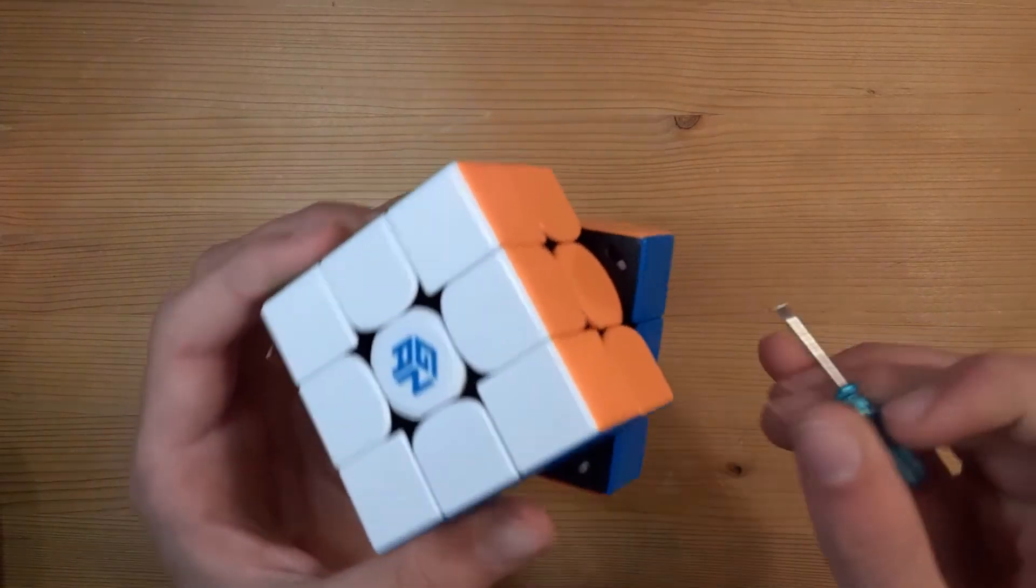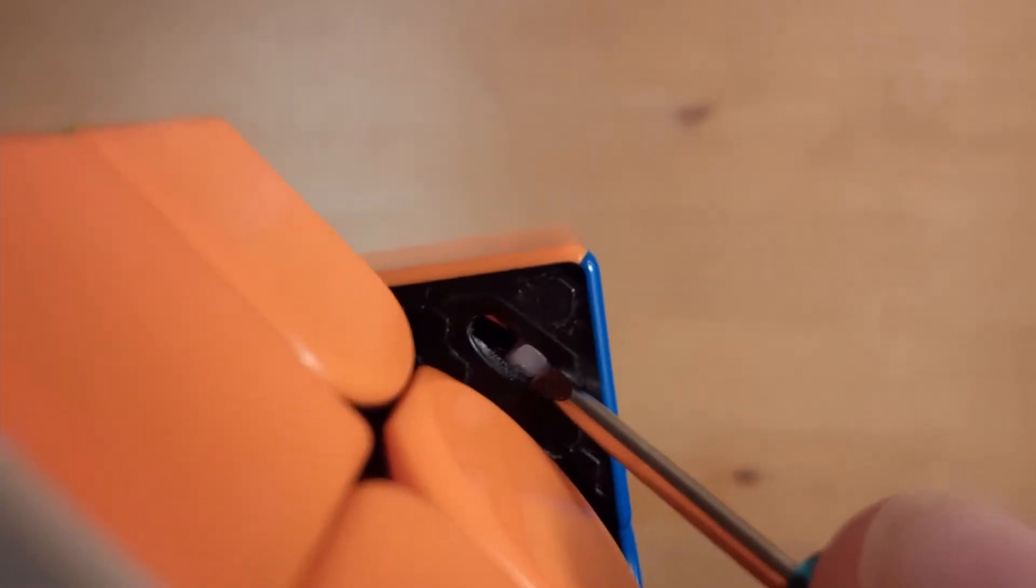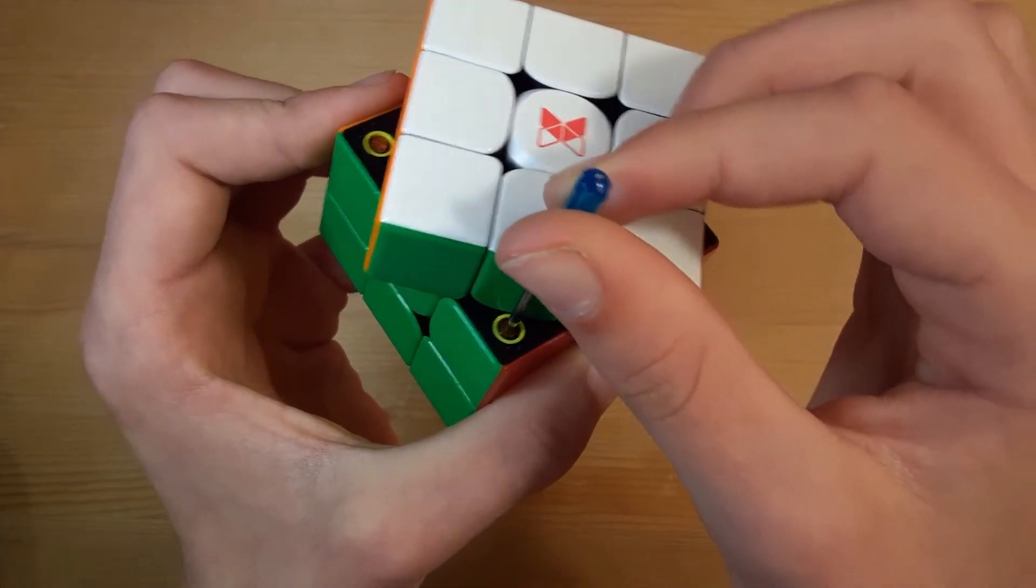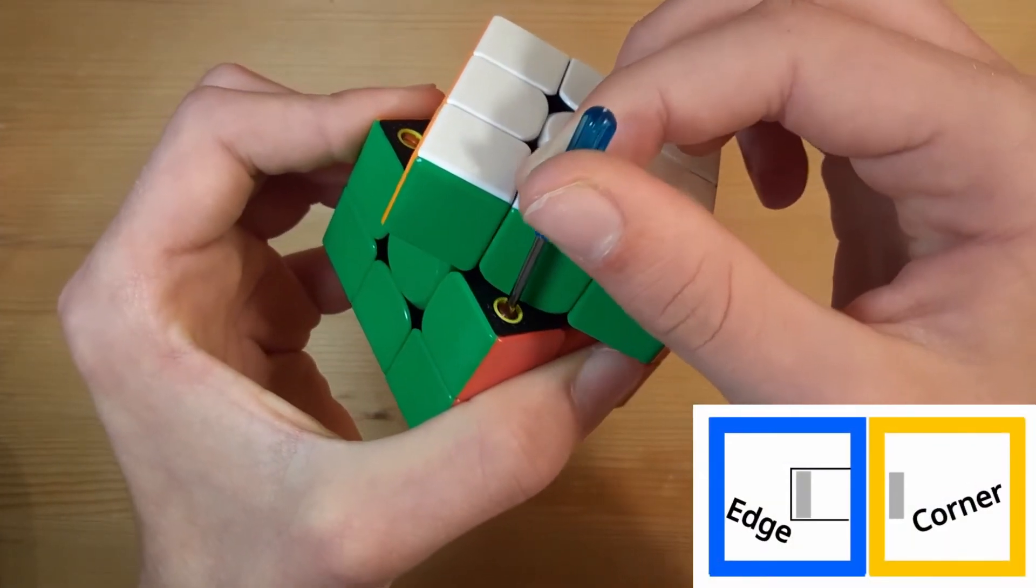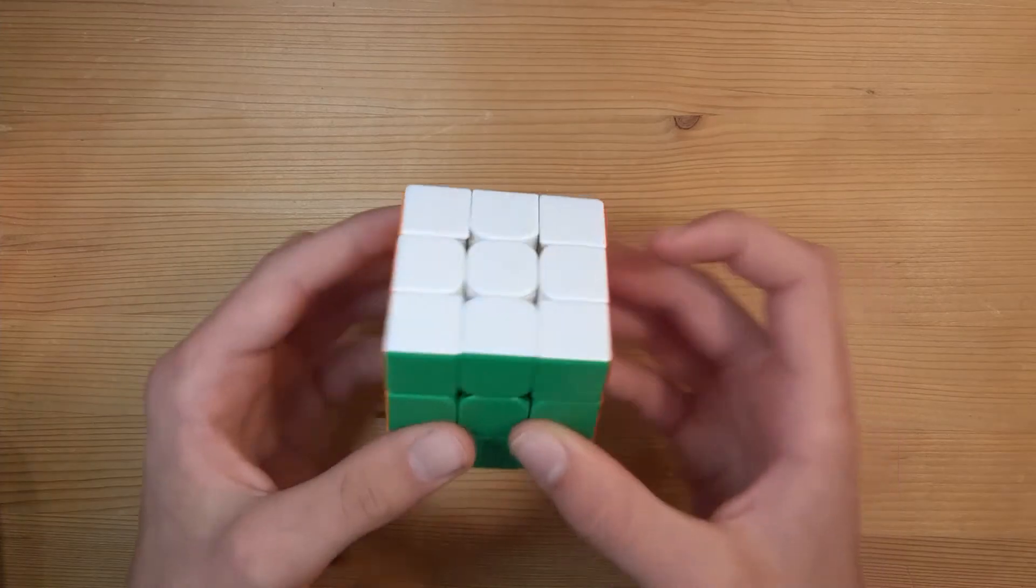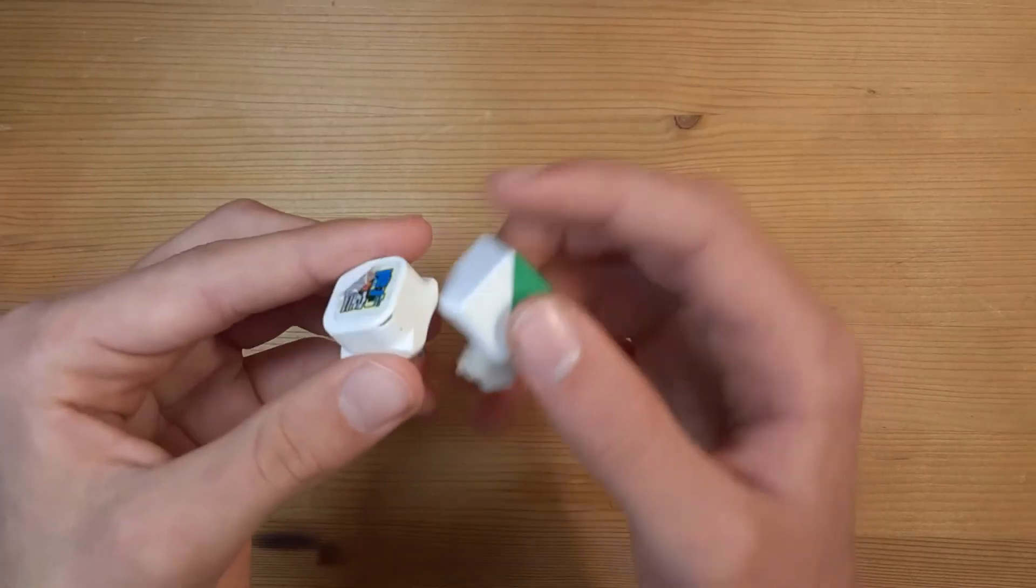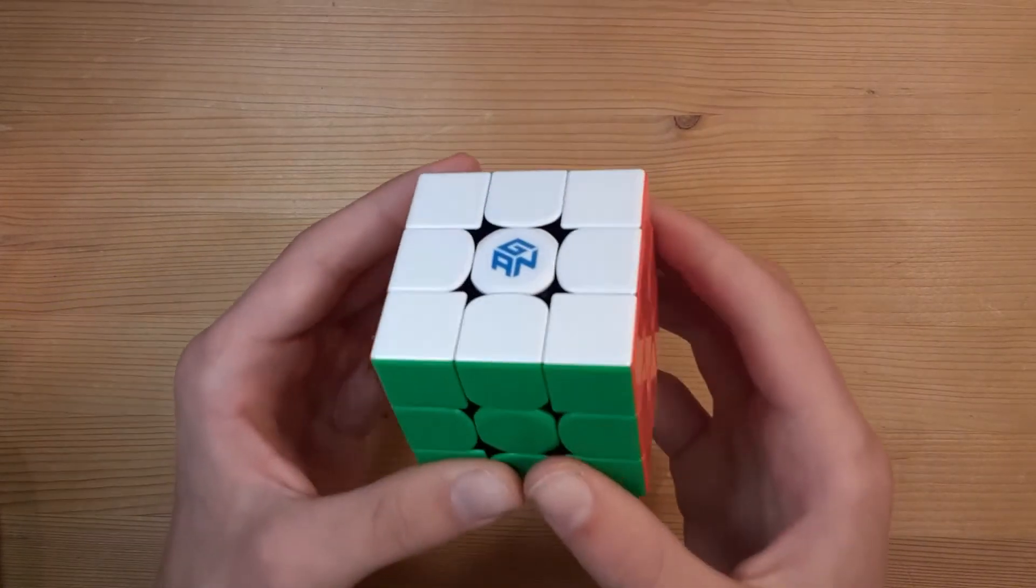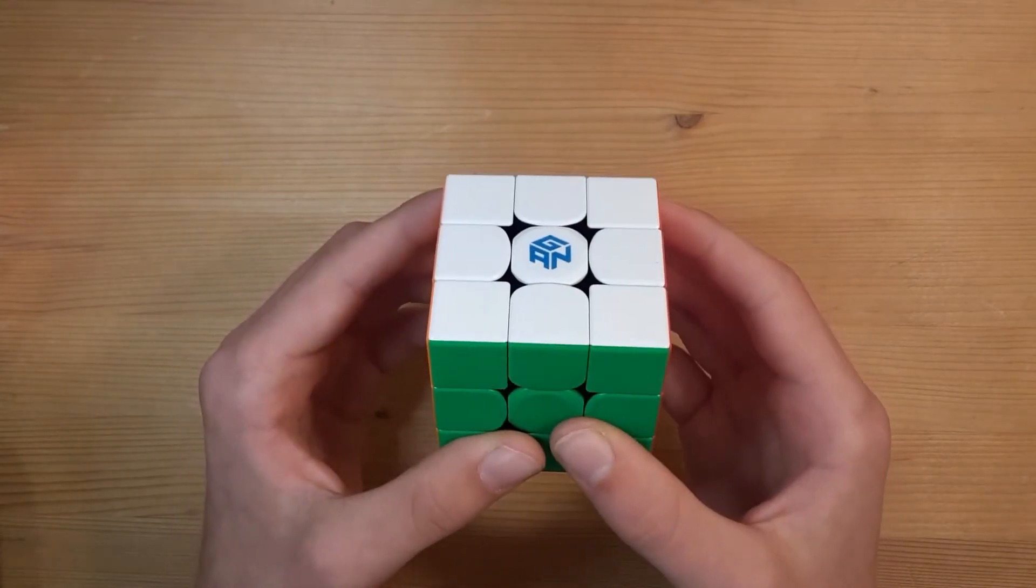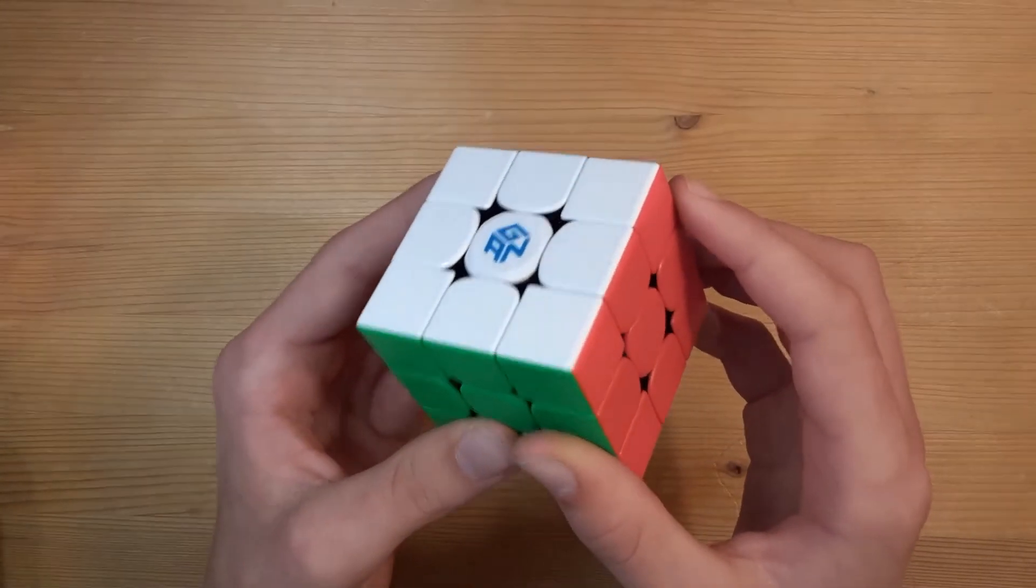Still, some more expensive cubes have magnet adjustment systems that allow you to change the strength of the magnet easily. Usually, they work by moving the magnet closer and farther away from the piece as you turn. There are other places to put magnets, like in between the center and the edge, but there is a magnet placement that GAN figured out, which made the GAN 11M Pro super popular, and now many cubes are being re-released with the same magnet placement.